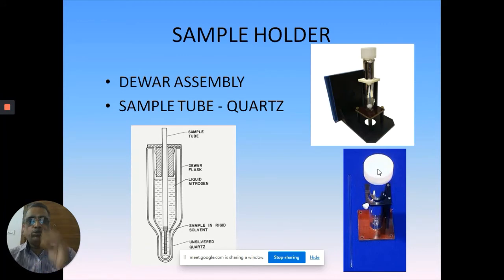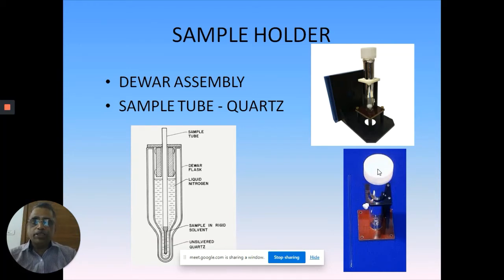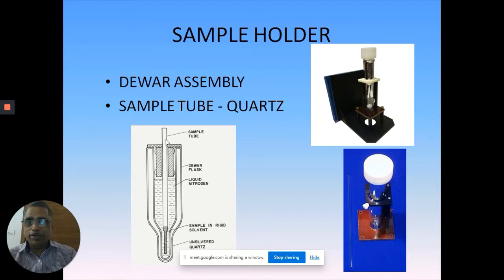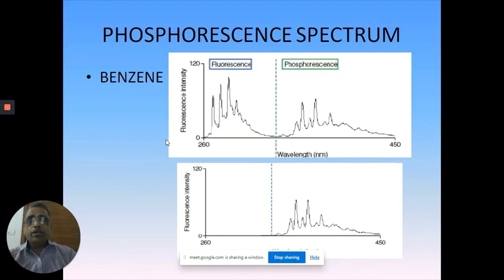Once you reach the bottom, leave it in your spectrometer, measure after some time - they attain the temperature. You will see a freezing action and glass formation, then you can start measuring. The sample tube is a quartz material and the Dewar assembly is also made of quartz. Without the Dewar, you cannot measure low-temperature phosphorescence. The quartz sample tubes must be handled very carefully - students often break them, but they are expensive and must not be broken.